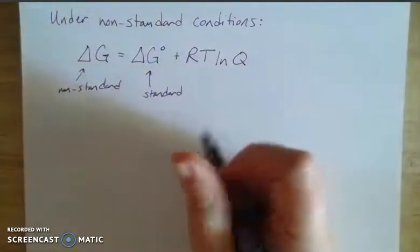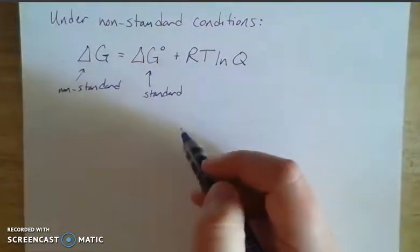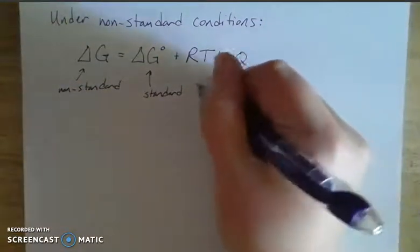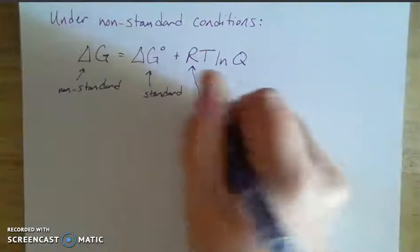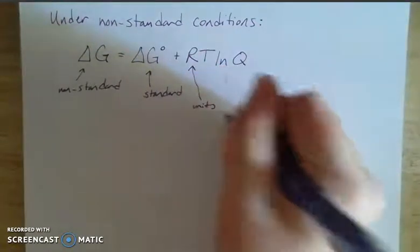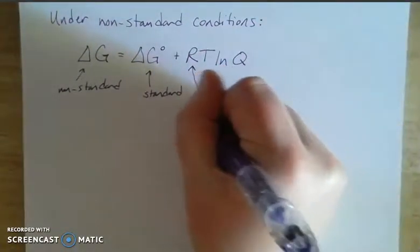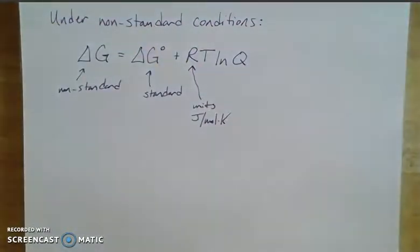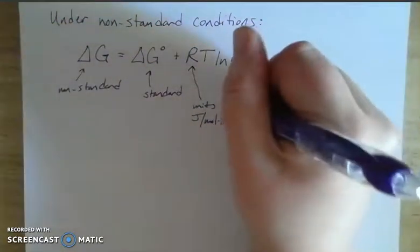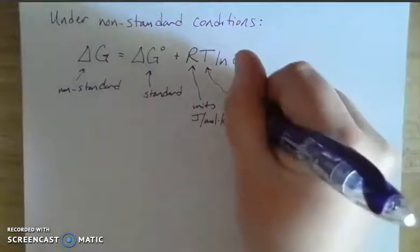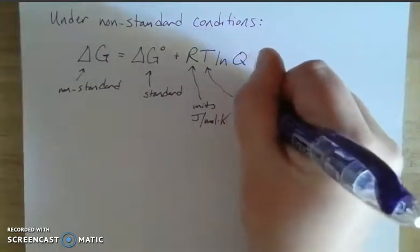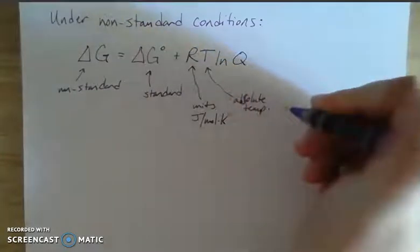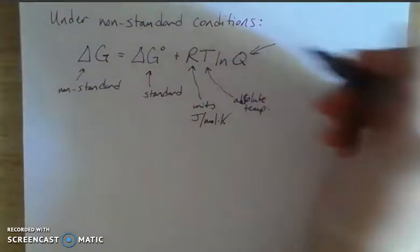R is a familiar face. We've been using R since gas law equations. So this R is our thermodynamic R, so we need to have the units of joules per mole Kelvin. So it's going to be our 8.31. T is the absolute temperature, so it's going to be in Kelvin, absolute.